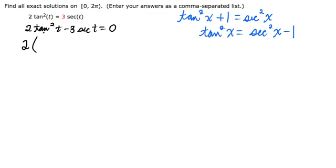So I'm going to substitute that in here for tangent squared t. So we'll have secant squared t minus 1. That's all times 2. Then this minus 3 secant t equals 0.